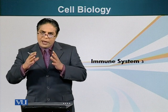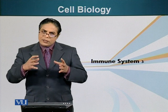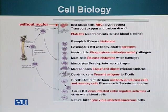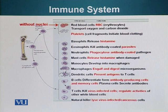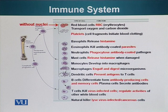Before we go any further and see what happens next, let's talk about the cells that make up the immune system. Here's a slide which shows you the major immune cells. All these immune cells originate from precursor cells in the bone — these cells reside in the bone marrow.